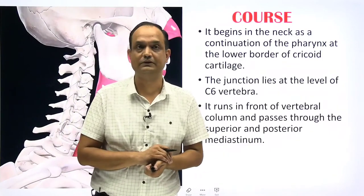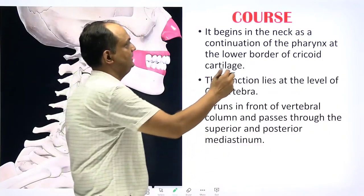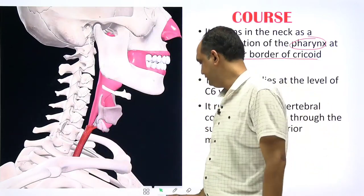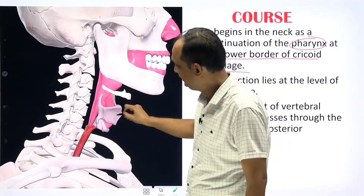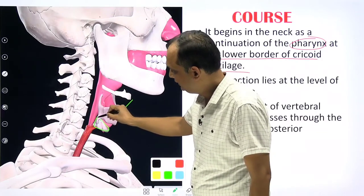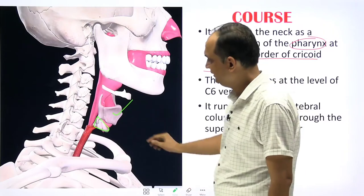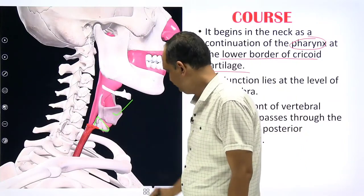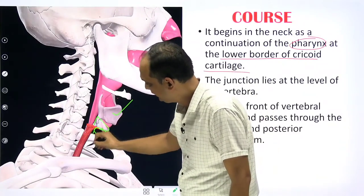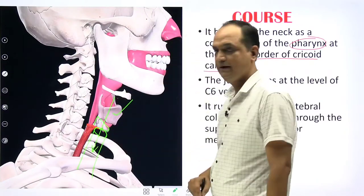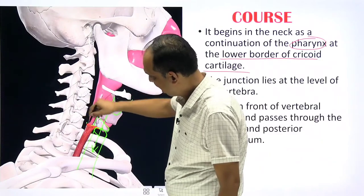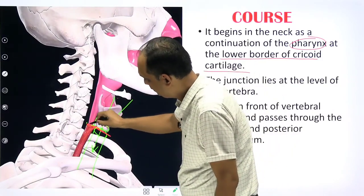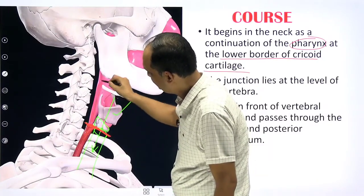Regarding the course of the esophagus: it begins in the neck as a continuation of the pharynx at the lower border of the cricoid cartilage. You can see the thyroid cartilage, and below it the cricoid cartilage. Below the cricoid cartilage is the point where the esophagus begins. Anteriorly, the bony landmark is the lower border of the cricoid cartilage, which is the junction of the pharyngeal tube and the esophagus.